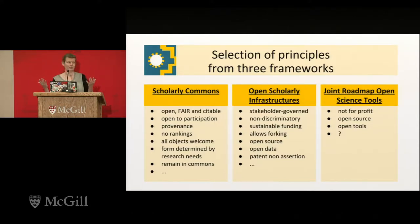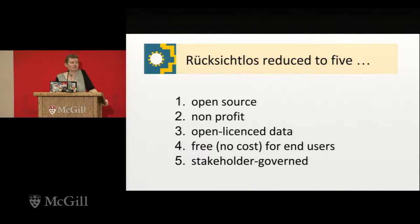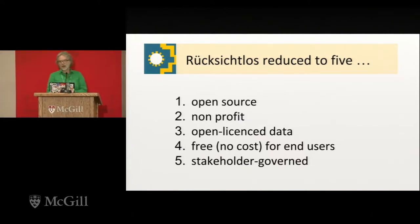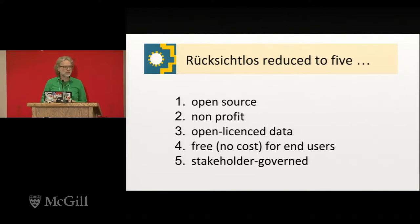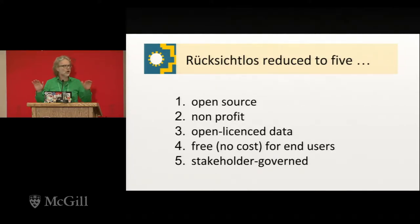All these are different criteria that people use. For this exercise, to make things tangible and workable, we reduced them to five criteria — and of course there's a lot to be said about why these five; partly because we only have half an hour, but we also think these might be some of the more crucial ones and ones on which there are different opinions: different opinions in this room, and especially between researchers and advocates for open organizations. The five are: open source, non-profit, open license, free or no cost for end users, and stakeholder governed.